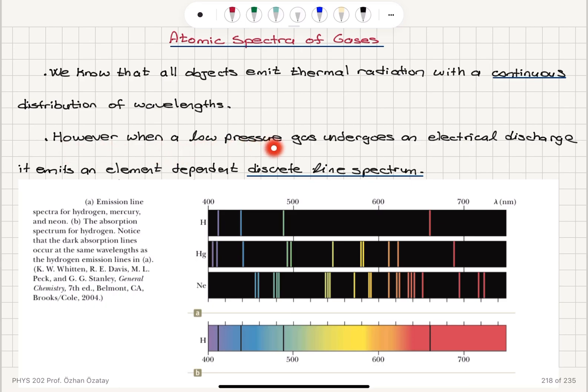However, when a low pressure gas undergoes an electrical discharge, it emits an element dependent discrete line spectrum.